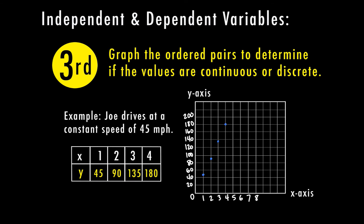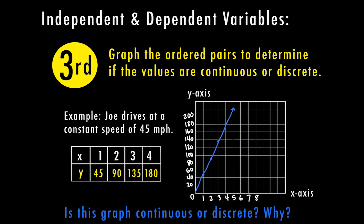This depends on what's happening in the situation. Joe is driving at a constant speed of 45 miles an hour — he starts at zero and continues driving at that constant speed. He's not driving for 45 seconds and stopping. Driving is a continuous action, so he's driving at a continuous rate. We would call this a continuous graph because it's a continuous action — he's going to continue driving until he stops at a constant speed.